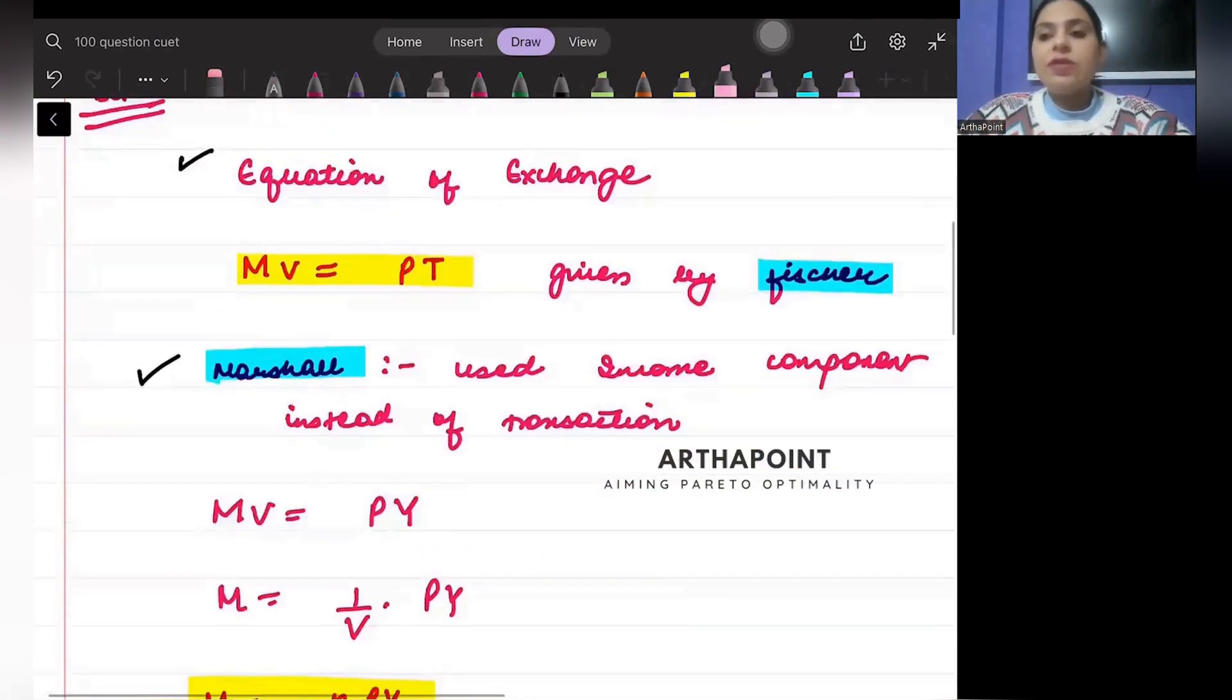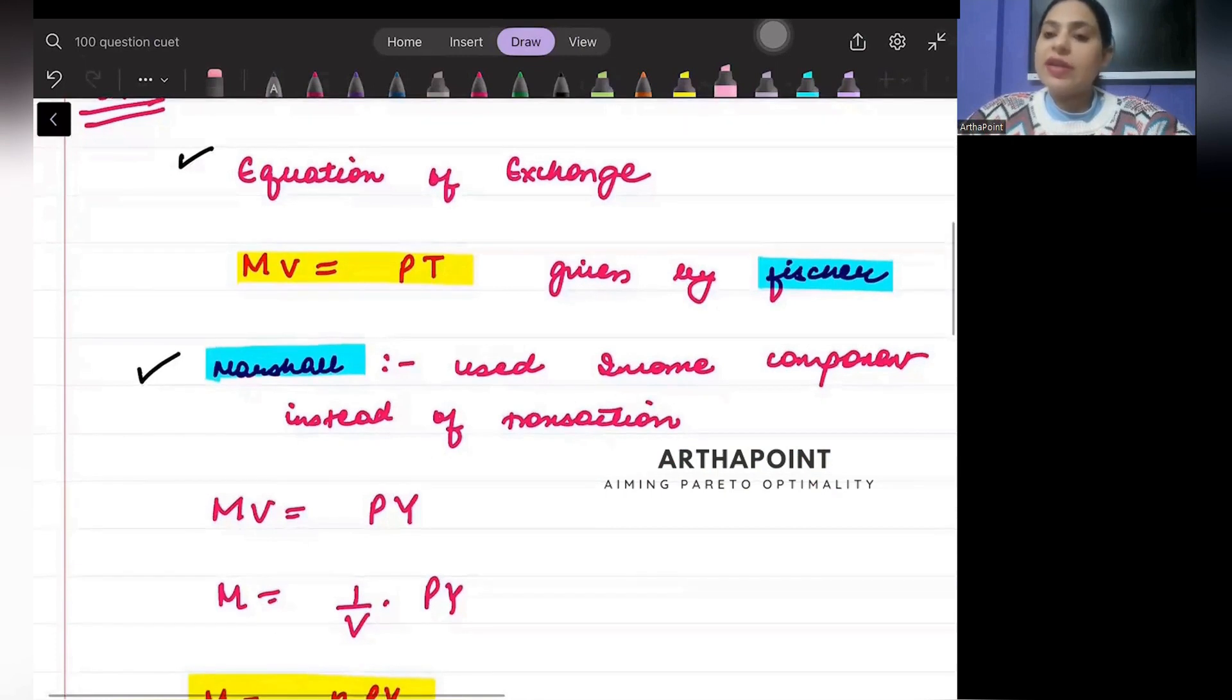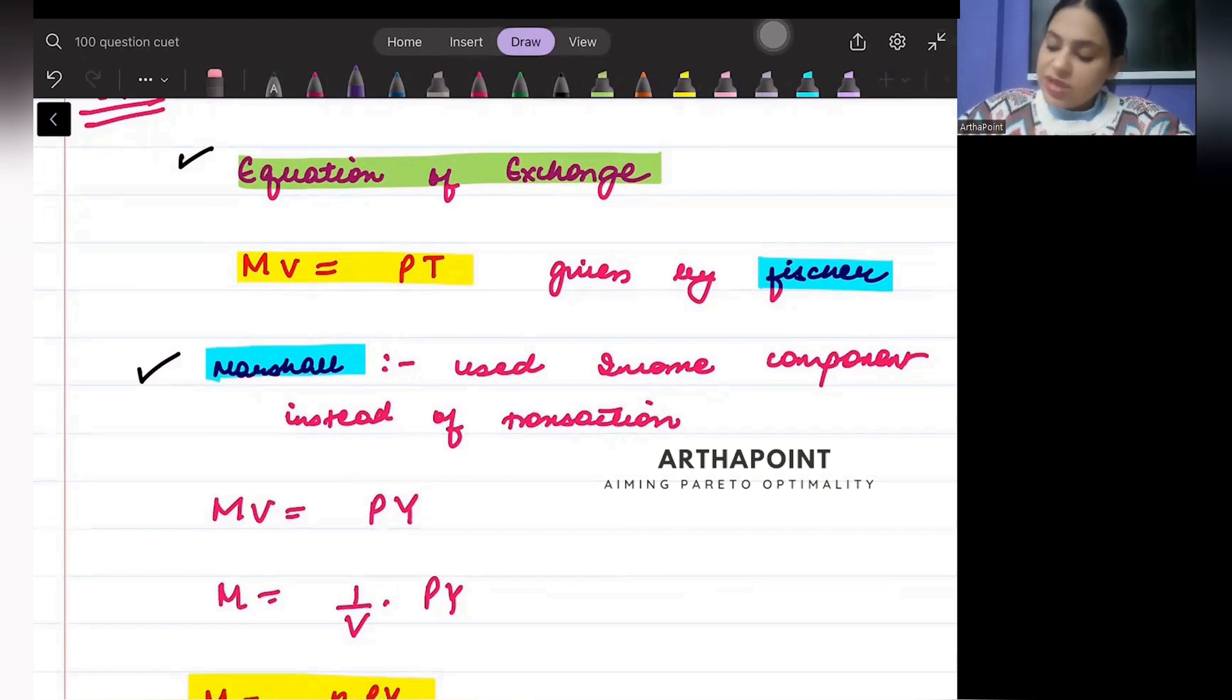Now please try and understand that Irving Fisher gave the equation of exchange, and according to him, the equation of exchange was MV = PT. He was the first one to start talking about the quantity theory of money.